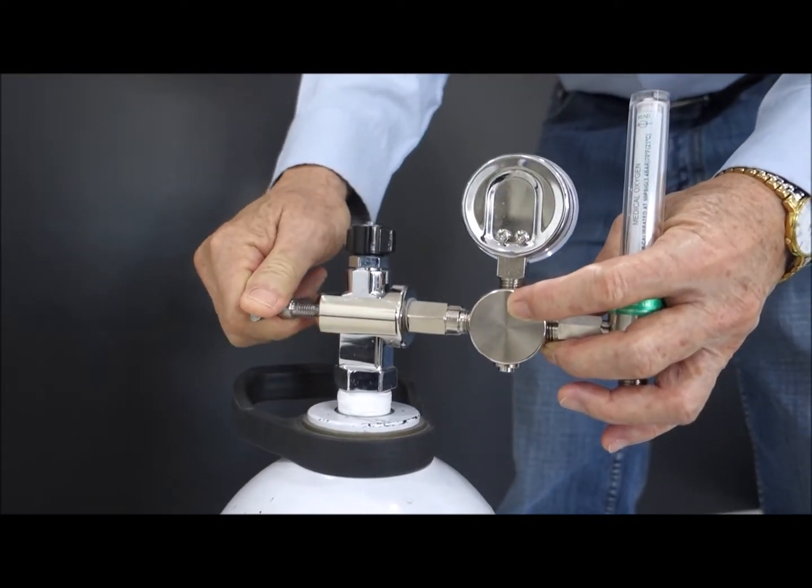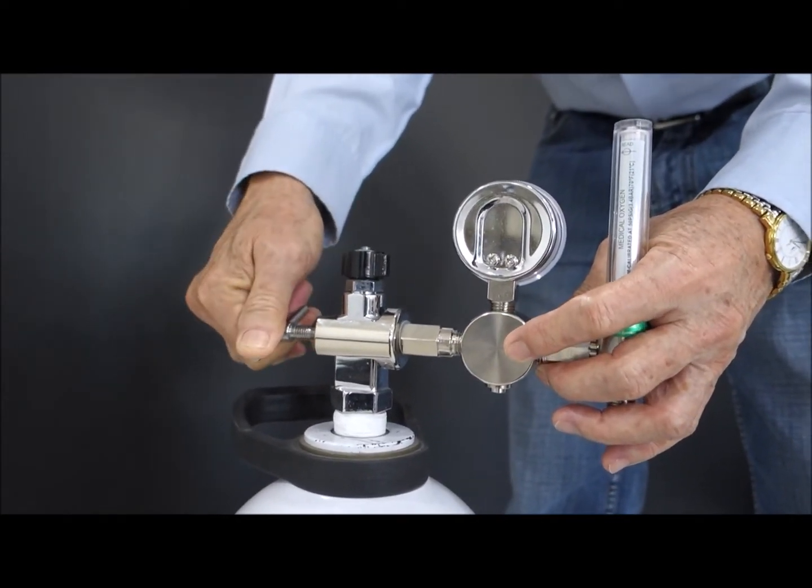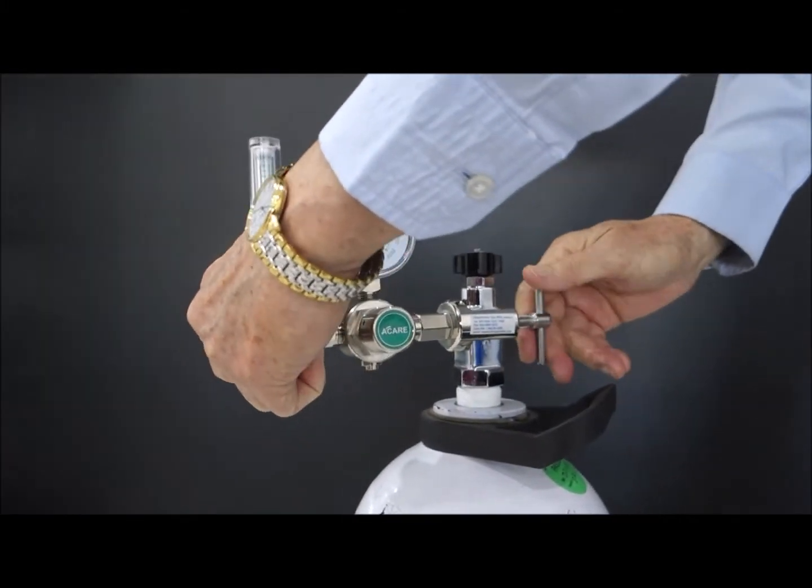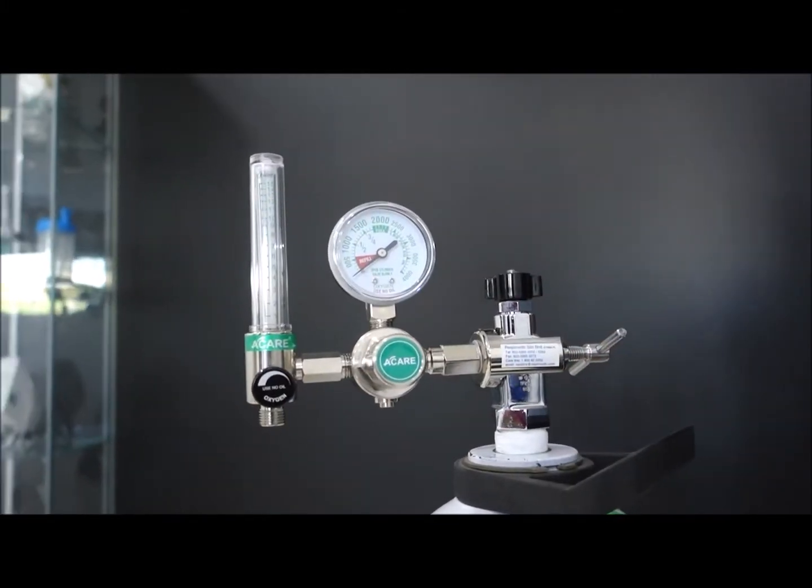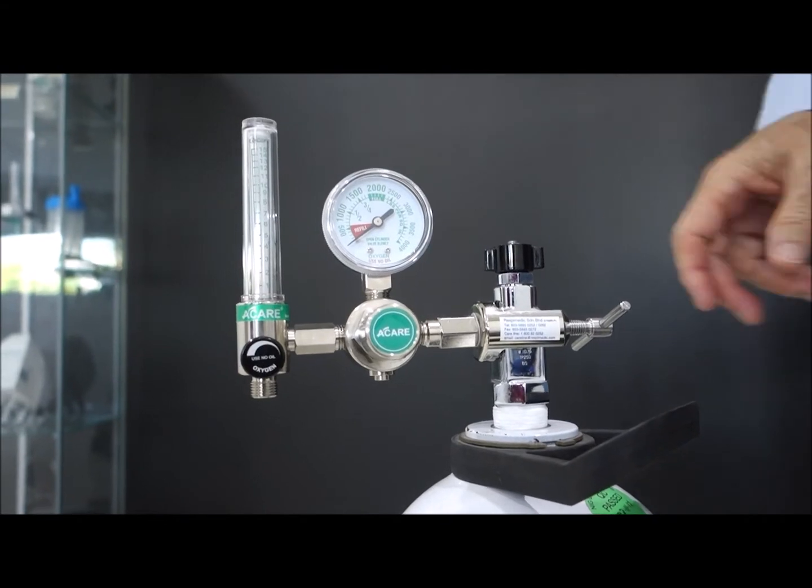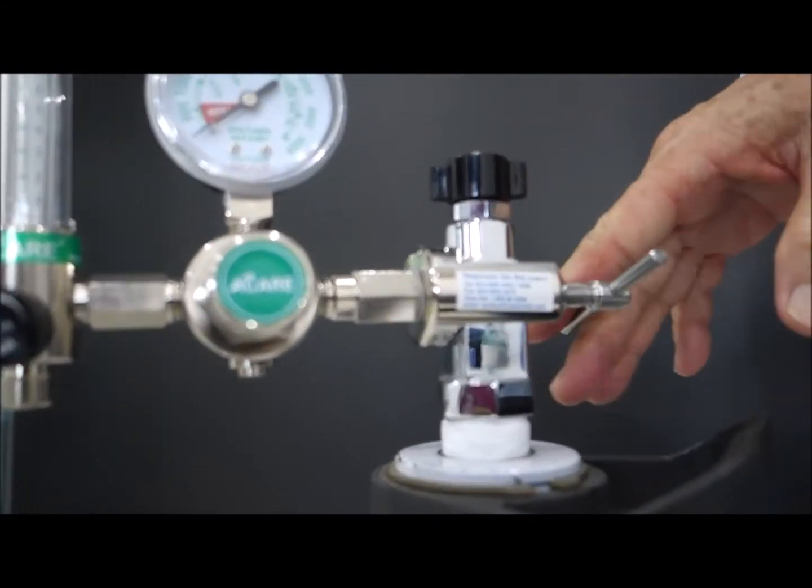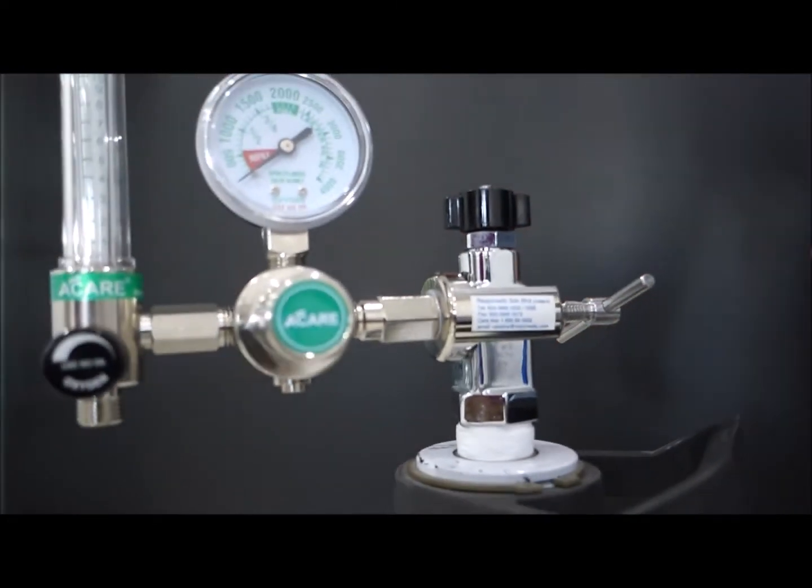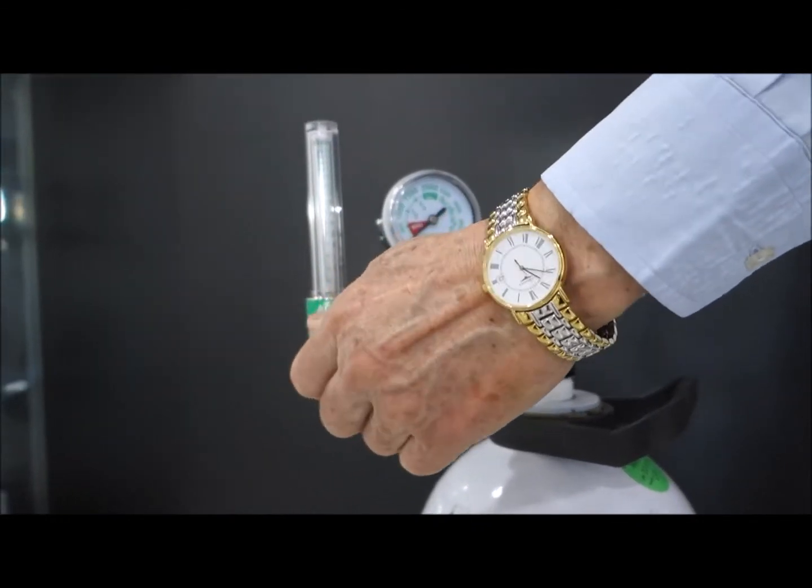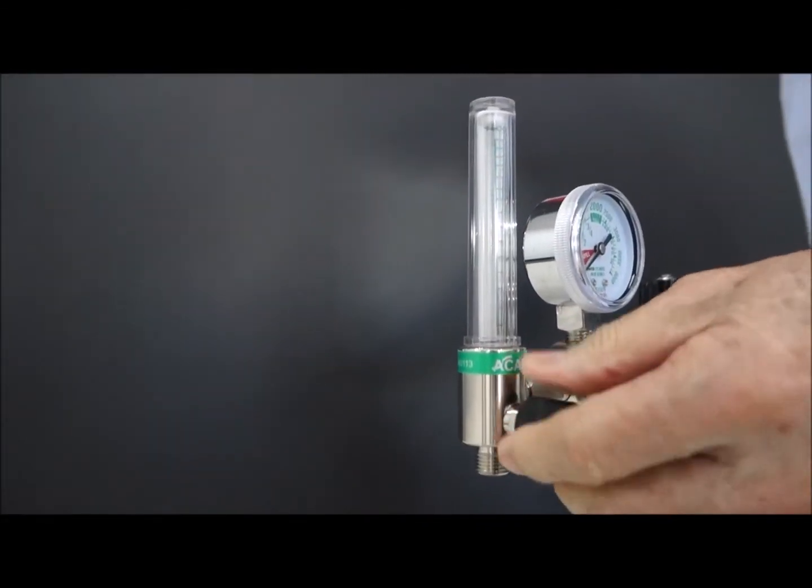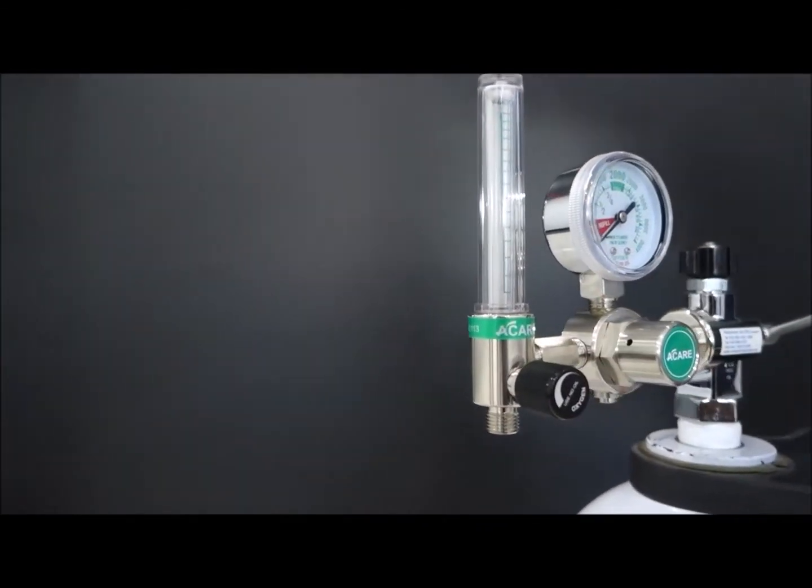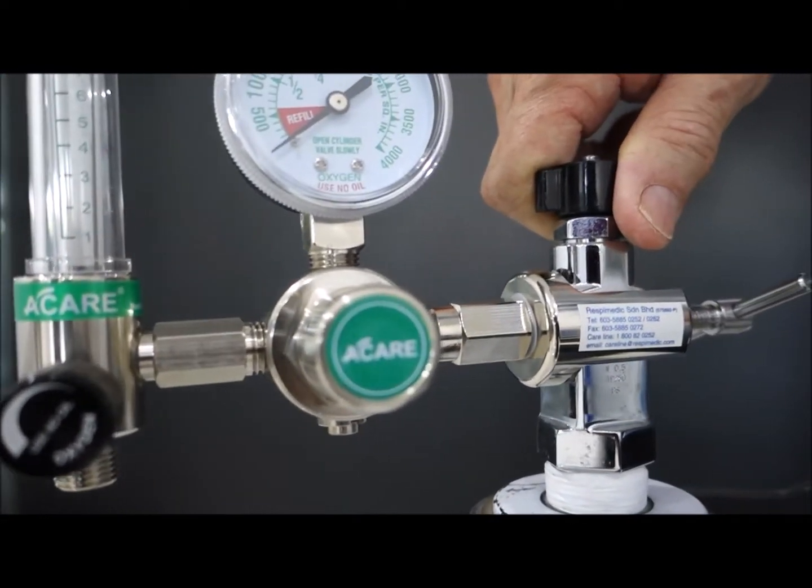So tighten as usual is clockwise. And then once you tighten it, you can position it anywhere and then tighten it. So the next thing after you tighten the regulator onto the cylinder valve, make sure the flow meter is turned off if you're not using. And then, turn on slowly, gently turn on the cylinder valve.